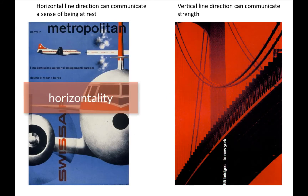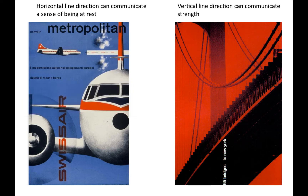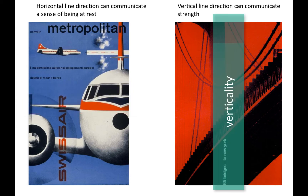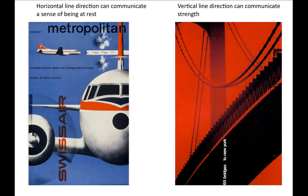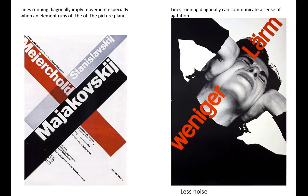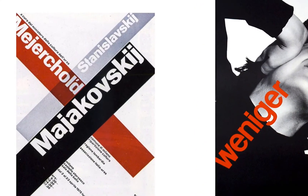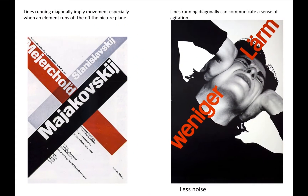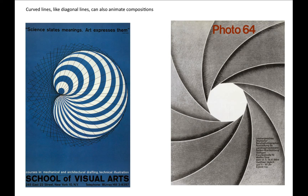Horizontal line direction can communicate a sense of being at rest. Vertical line direction can communicate strength. Lines running diagonally imply movement, especially when an element runs off the page or the picture plane. Lines running diagonally can also communicate a sense of agitation. Curved lines, like diagonal lines, can also animate compositions.